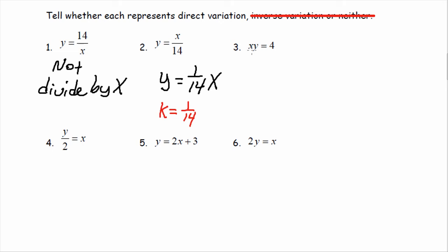On three, xy equals four. Before we can tell, just like when we are graphing lines, we have to get y by itself. So, I'll divide by x and we get y equals four divided by x. And, just like example one, this is not direct variation, because we are dividing by x. It's not okay to divide by x. We want to be multiplying by x.